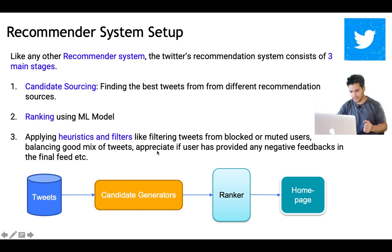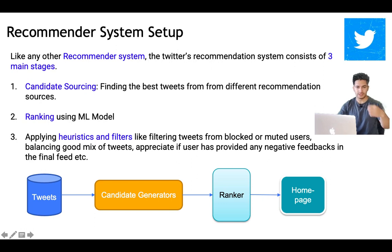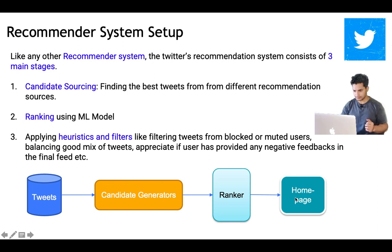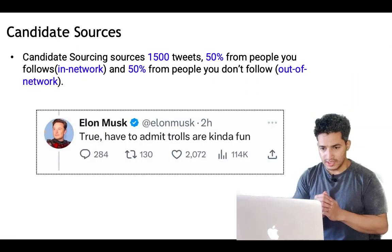The system also appreciates negative feedback — if a user has indicated they don't like a tweet, a type of content, or tweets from a particular user, those signals are incorporated. So the full pipeline is: 500 million tweets → candidate generator sources a bunch of tweets → ranked by the ranker → heuristics and filters applied → shown on the home page.